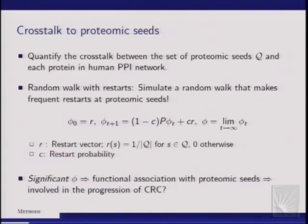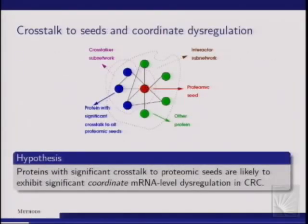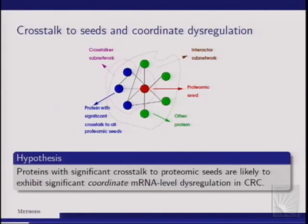Once we identify the significant cross-talkers for each proteomic seed — the red protein is the proteomic seed — we construct a network. The blue proteins are those identified as significant cross-talkers. The green ones interact with a proteomic seed but do not exhibit significant cross-talk when all seeds are considered. Our hypothesis is that the blue cross-talkers will exhibit more significant coordinate dysregulation in colorectal cancer compared to the entire neighborhood of a proteomic seed.